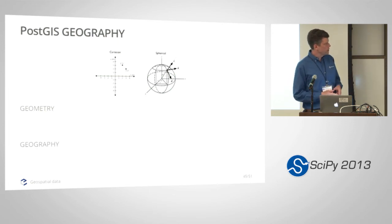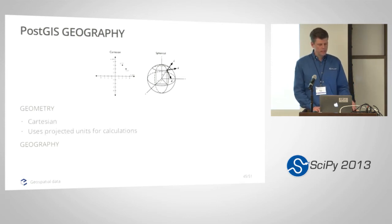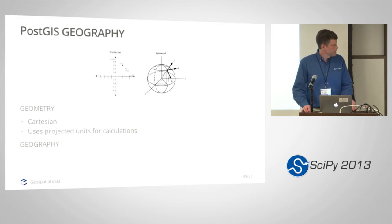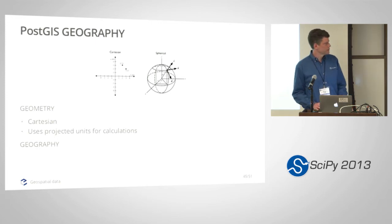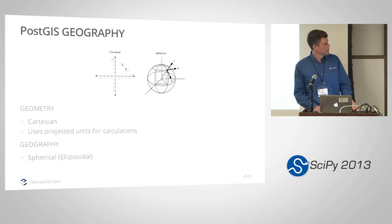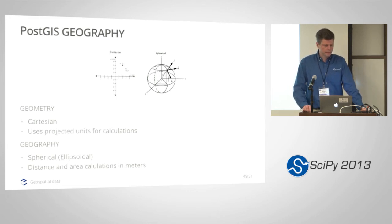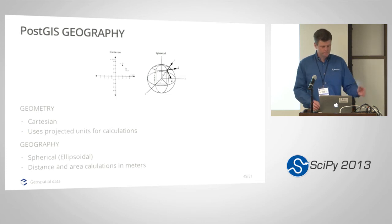There's an important distinction between geometry and geography in the context of PostGIS. Geometry is planar and Cartesian - all calculations are in whatever the projected units are. So if your numbers are in degrees, it calculates square degrees for areas. Geography treats points on an ellipsoid, generally WGS84 - PostGIS only works with WGS84 for geography at the moment. Distance and area calculations for geography are all in meters. You can choose which type to use and translate between them.